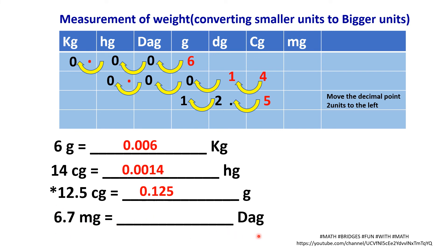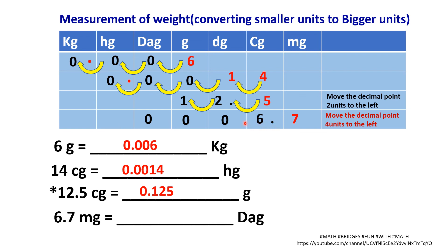One more example with a decimal: convert 6.7 mg into decagram. Mg is the starting position; write 6.7 there. DAG is the ending point, marked with 0, and fill zeros in between. Count the jumps — 5 digits, minus 1 equals 4 jumps. Move the decimal point 4 units to the left: 1, 2, 3, 4. Therefore, the answer is 0.00067 DAG.